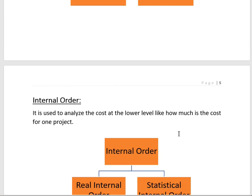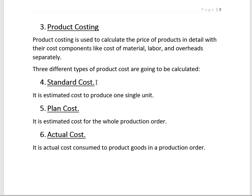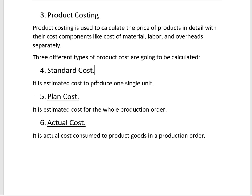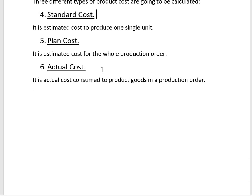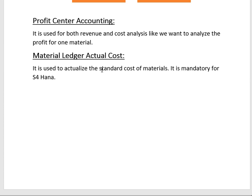The final component is Material Ledger. As discussed, the system maintains materials at their standard cost, but valuing materials at standard cost has a disadvantage: it does not follow the IFRS requirement to value materials at the lower of cost or net realizable value. SAP introduced Material Ledger Actual Costing to address this — the system evaluates all materials at their actual cost, fulfilling the requirement to value materials at the lower of cost and NRV.